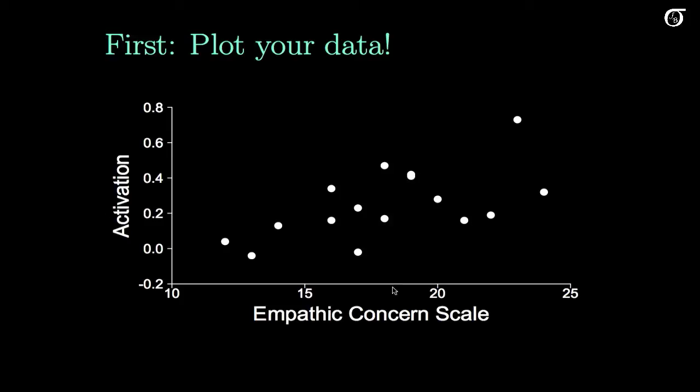Now here we've got our X variable, the score on the empathic concern scale, and here we've got our Y variable, the activation level as measured by the MRI.